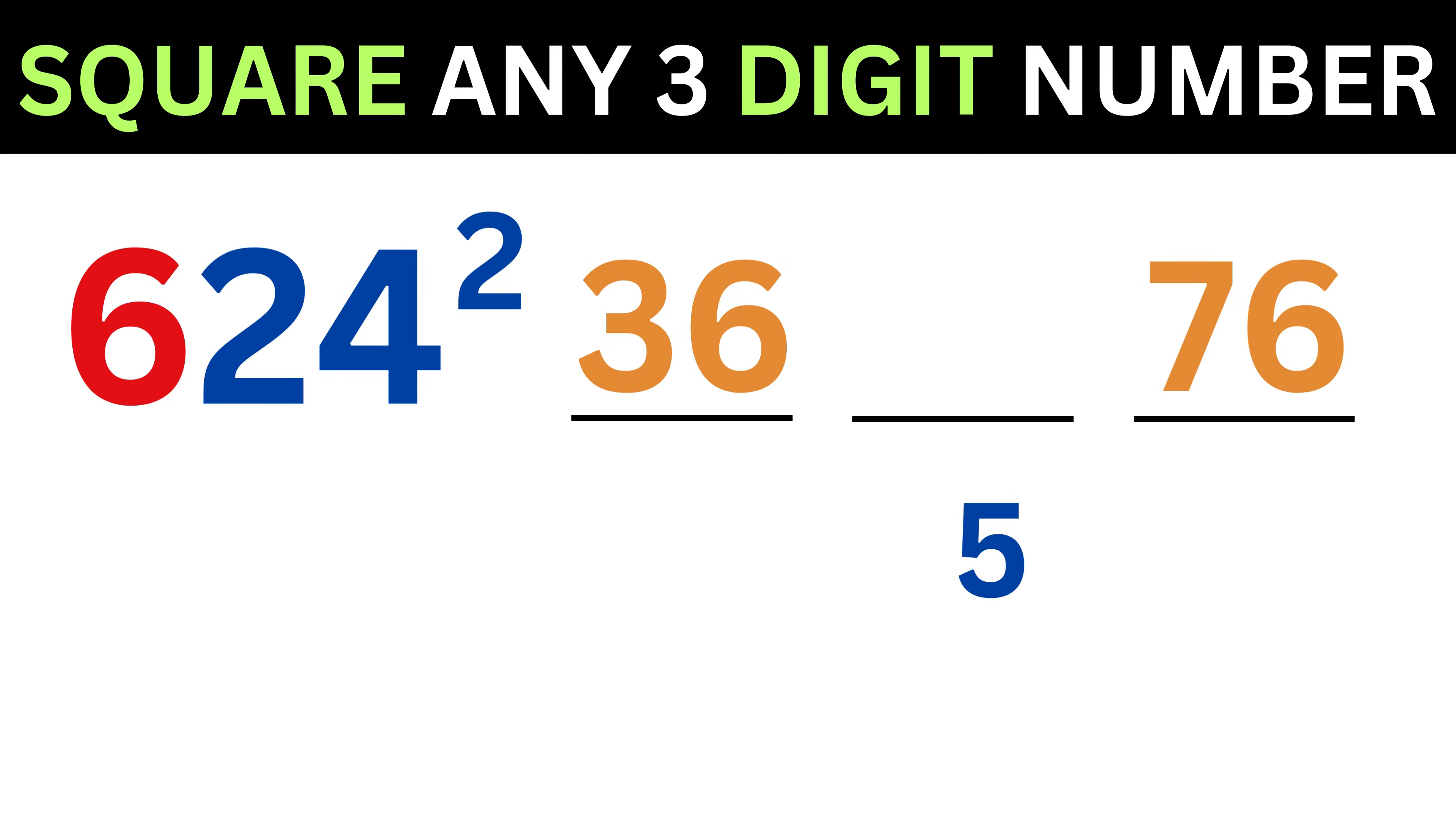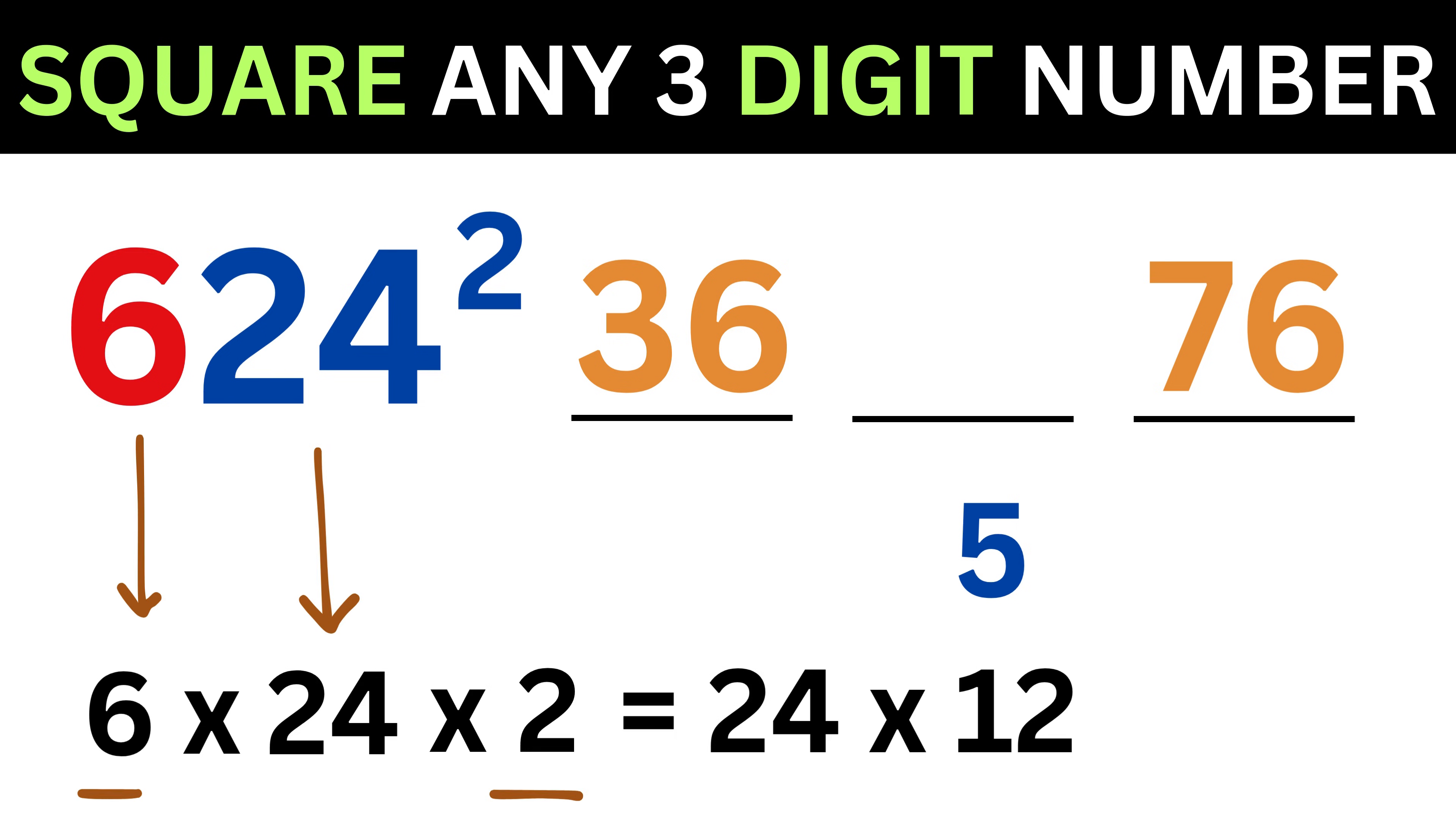Now for the middle part, 6 times 24 times 2 equals 24 times 12, or 12 times 12 times 2, or 144 times 2, or 288. So write 88 here, and then carry 2 to the first part.